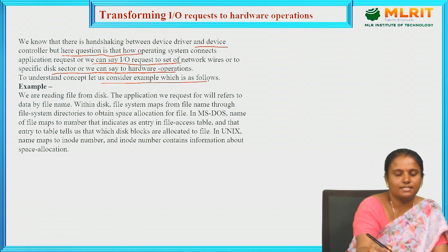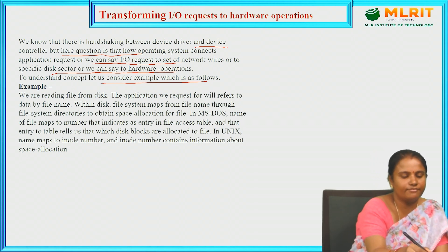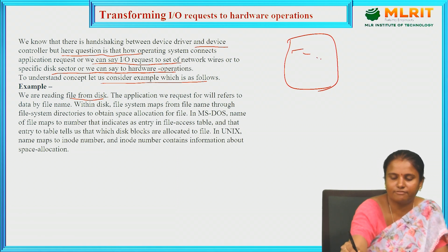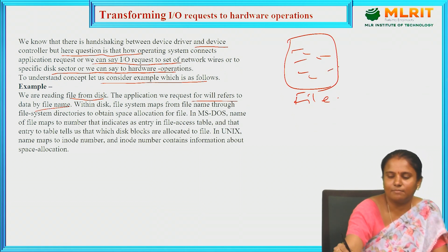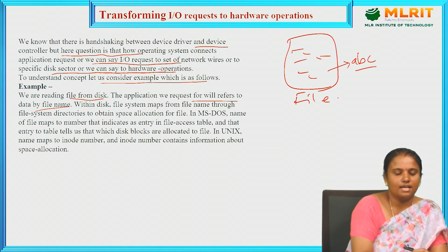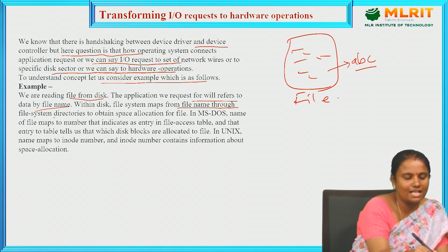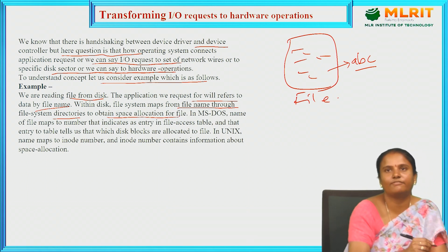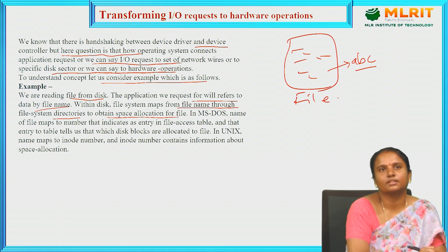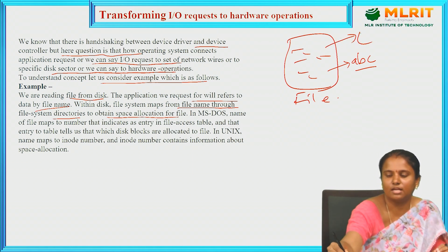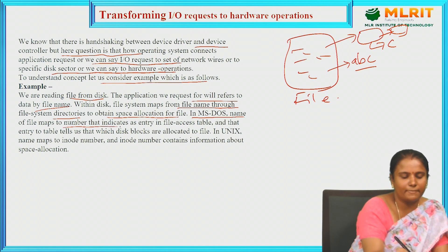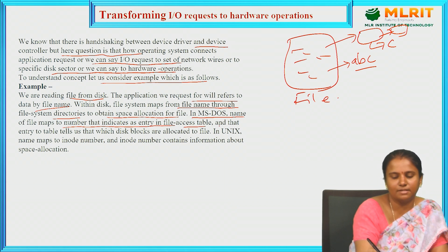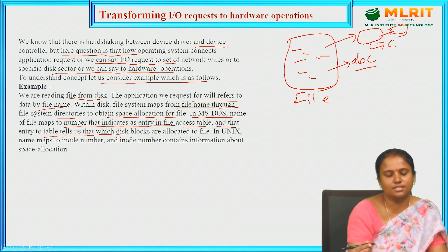To understand this concept, let us consider the example of reading a file from disk. The application request refers to a data file by name — for example, file 'abc'. Within a disk, the file system maps from the file name through file system directories to obtain the space location for that file. In MSDOS, a file name indicates an entry in the File Access Table, and that entry tells which disk blocks are allocated to that file.